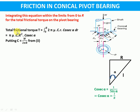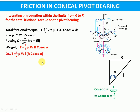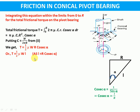Putting c equals W upon 2πR, we get T equals (1/2)·mu·W·R·cosecant alpha, or we can write T equals (1/2)·mu·W·L, since L equals R·cosecant alpha, where L is the slant height of the cone, R is the radius of the cone, mu is the coefficient of friction, and W represents the axial load acting on the shaft.